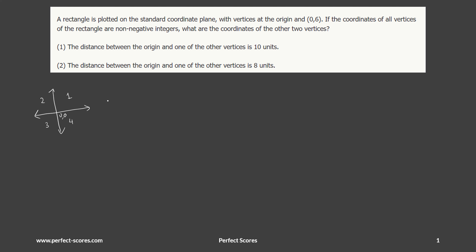The rectangle has its vertices at the origin — this point here — and at (0, 6), where x is zero and y is six. So let me draw a bigger diagram: one vertex at the origin (0,0) and another at (0, 6).